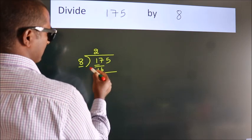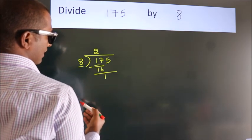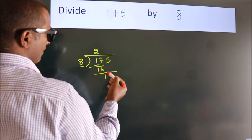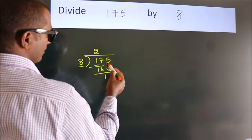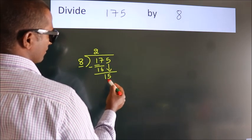Now we should subtract. We get 1. After this, bring down the beside number. So, 5 down. So, 15.